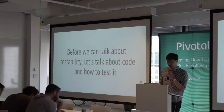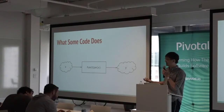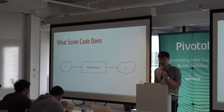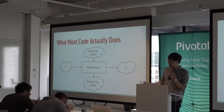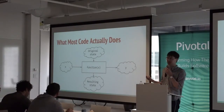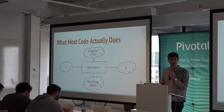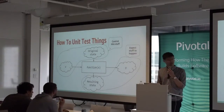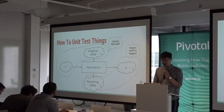What is testing? Before we can talk about testability, let's talk about code and how to test it. A pretty pure function is one where given some inputs, it produces some outputs — those are really easy to test. But most of our code doesn't actually look this way. Most of the time we write stateful code — what's called an impure function, which reads and writes to state. How do we test it? You just control that stuff, expect some stuff to happen, and you have a test.